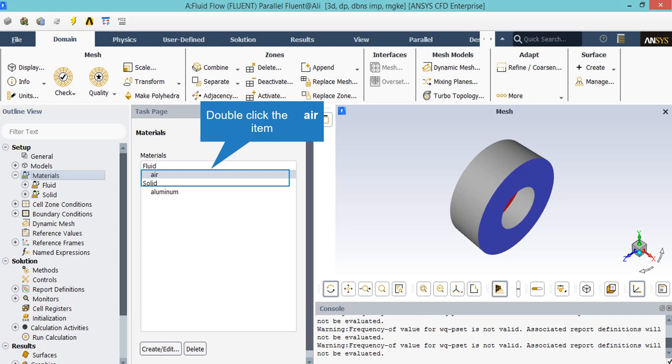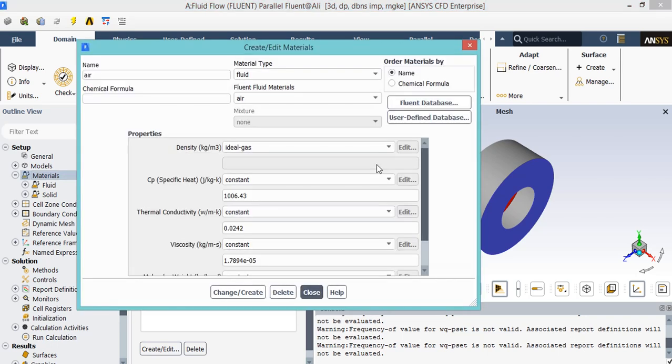Our main material for this simulation is considered to be air. By double clicking on the air, a new dialog box will appear. You may also change the other settings based on your desire, but we highly recommend you to not change these settings.